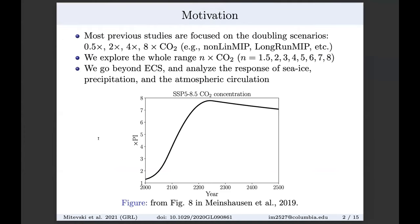Most previous studies focus on doubling scenarios — 0.5, 2x, 4x, and 8x CO2 — which makes sense as radiative forcing has a log dependence on CO2 concentration. But looking at the CO2 time series in the SSP 8.5 scenario, around 2100 we'd be at about 4x CO2 and around 2200 at almost 8x CO2. So we explore the whole range — N times CO2, with N being 1.5, 2, 3, 4, 5, 6, 7, and 8 — and also go beyond ECS to analyze sea ice, precipitation, and atmospheric circulation.